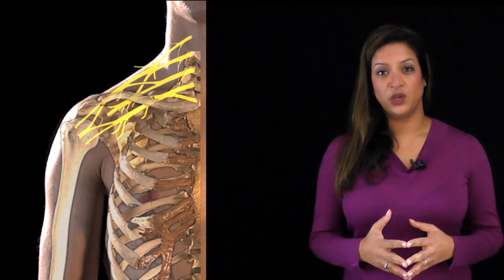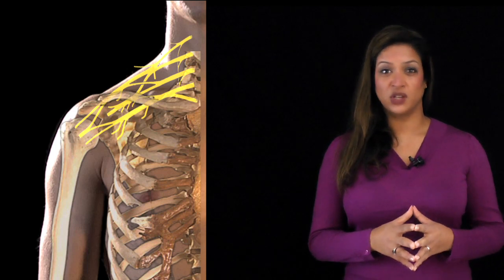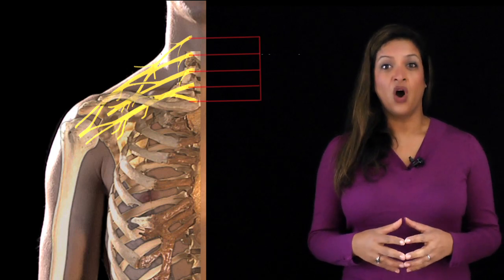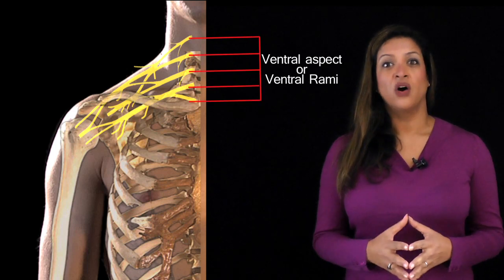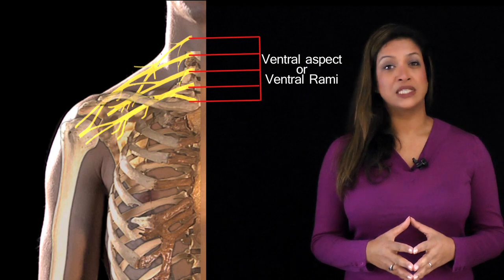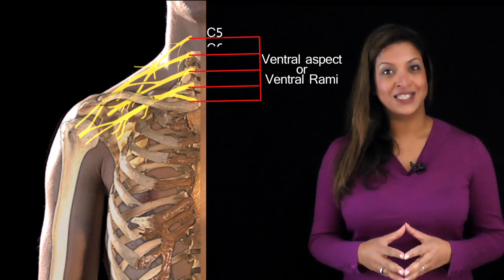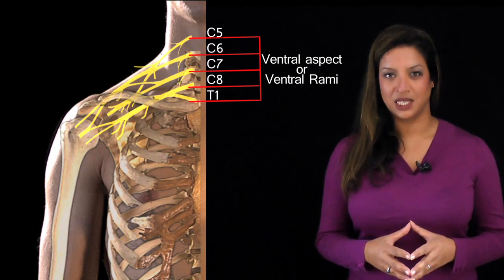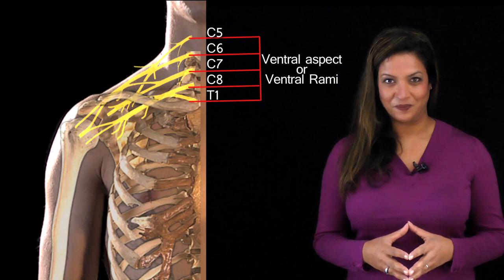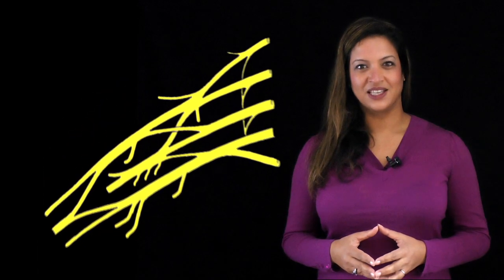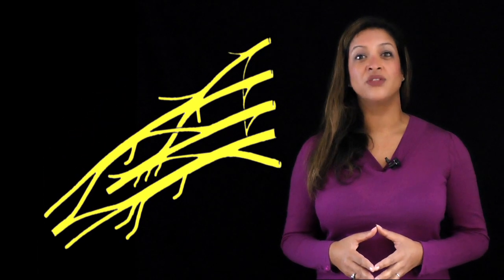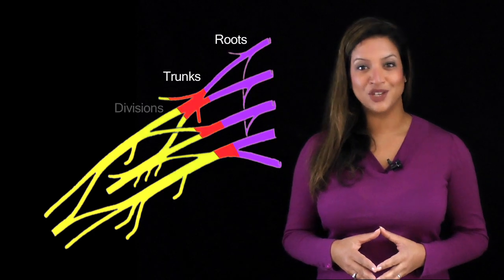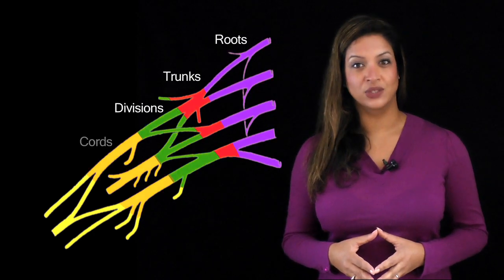The brachial plexus is formed by the union of the ventral rami of nerve roots C5, C6, C7, C8 and T1. There are different sections of the brachial plexus: the roots, the trunks, the divisions and cords.